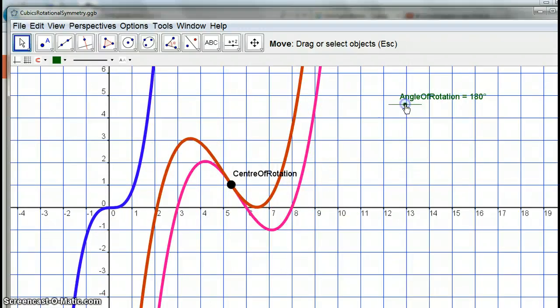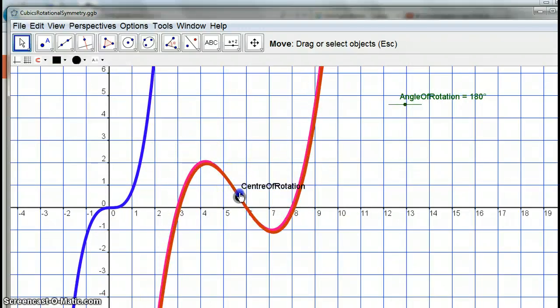I need to find my 180, but, of course, I need to move my centre of rotation, don't I? Different graph. So the centre of rotation is actually the midpoint between the local maximum here and the local minimum there.